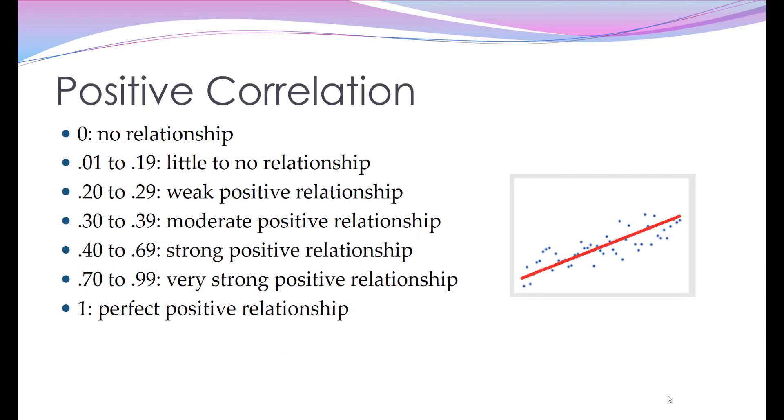So positive correlation, as I mentioned earlier, runs from a very small positive number all the way up to one, which would indicate a perfect positive relationship. These categories listed here are just to give you a kind of a guide, but if you saw a correlation of say 0.8, you would think it would be reasonable to say that there's a very strong positive relationship.